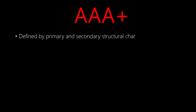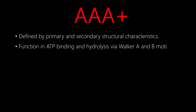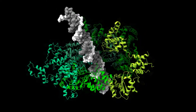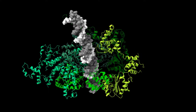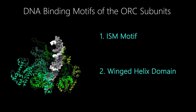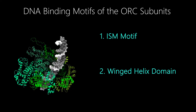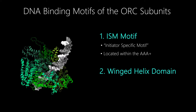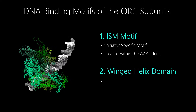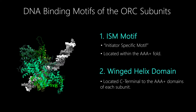AAA+ proteins are defined by primary and secondary structural characteristics, as well as ATP binding and hydrolysis, which is associated with their Walker A and B motifs. There are two DNA binding motifs present on the ORC1 to 5 subunits: the ISM motif and the winged helix DNA binding domain. The ISM motif in these subunits is part of the AAA+ fold, while the winged helix motifs are located C-terminal to their AAA+ domains.